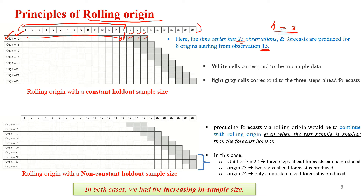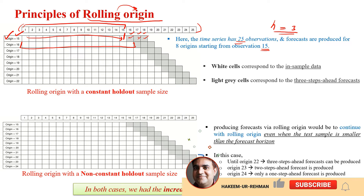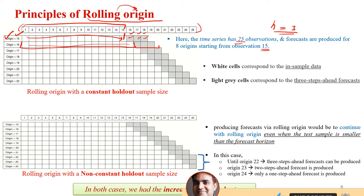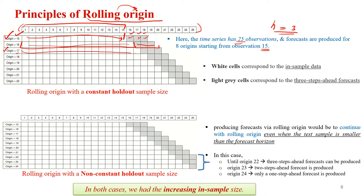Once we've calculated accuracy for origin 15, we roll the origin from 15 to 16 — now we have observations from 1 to 16. Again we predict the 3-period forecast horizon. We fit the model on the extended dataset and test on the next three observations. Then we roll the origin again to 17, so 1 to 17 becomes our dataset, and these are the forecast horizon points.